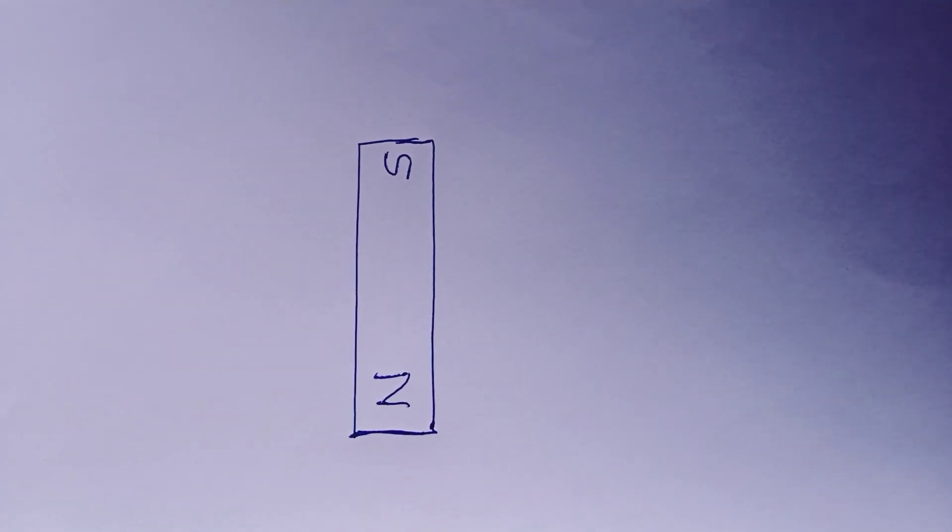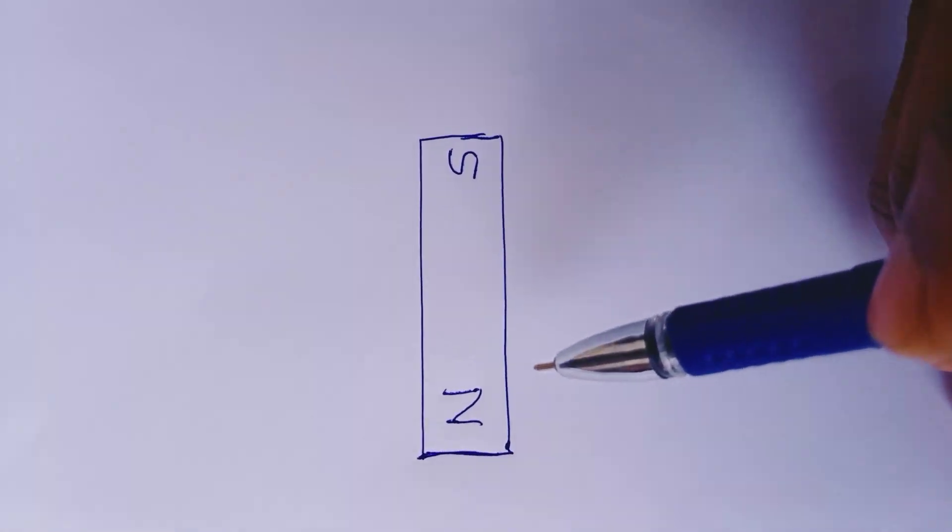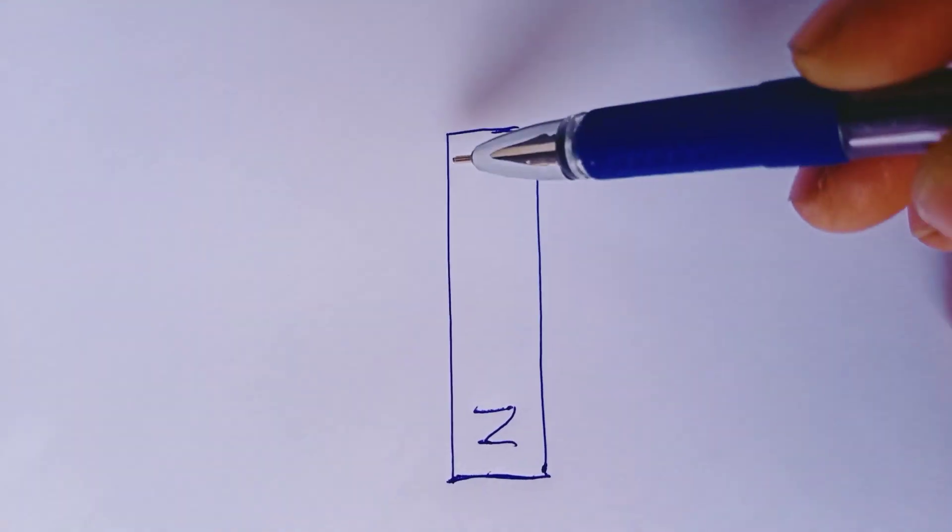Why are the magnetic field lines closed curves? That is the question. We know that a magnet has two poles which are called north and south pole.